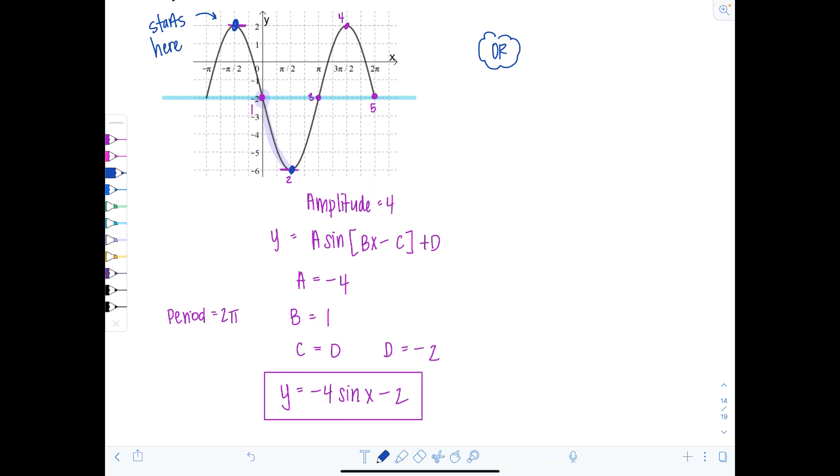A is going to be positive 4 this time since we're starting at the top. So if we're going to use y equals a cosine bx minus c plus d, a is equal to positive 4. All right, b is still 1. The period is the same here in this case.